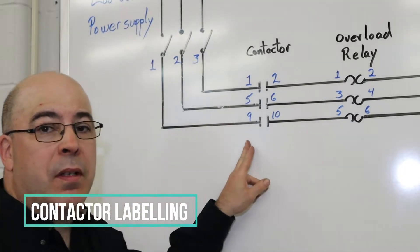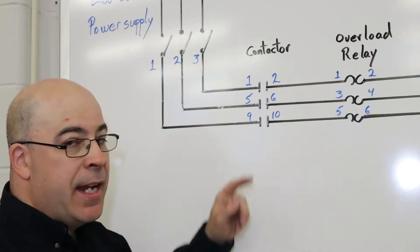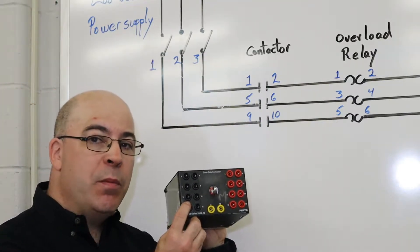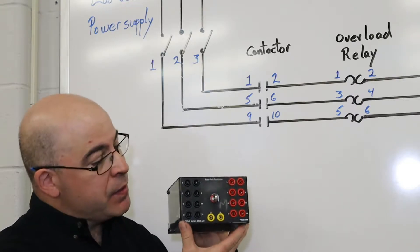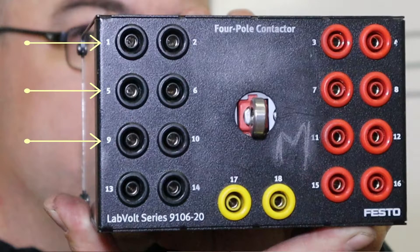The numbers on the whiteboard here - one, two, five and six, and nine and ten - represent the normally open contacts of this four-pole contactor that is currently in use with the Labvolt system.